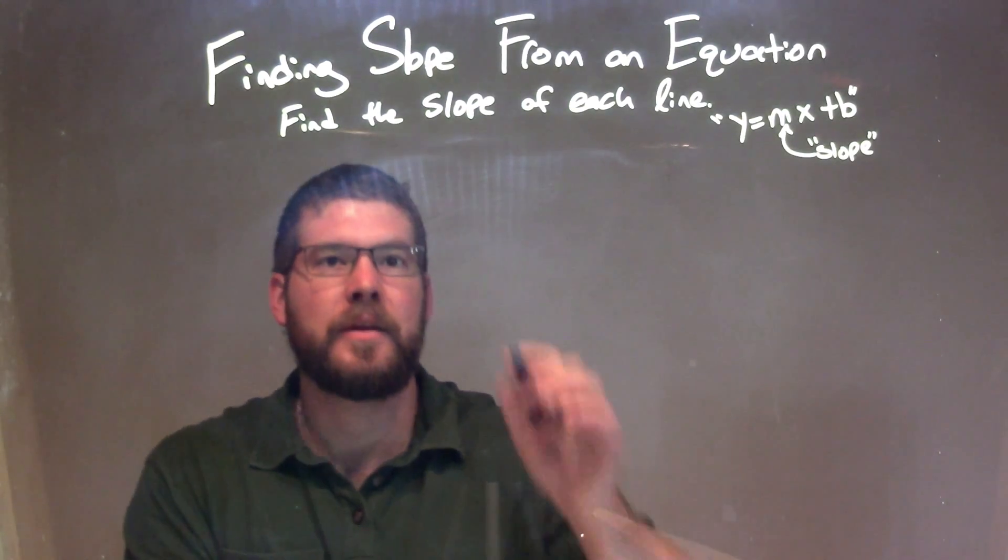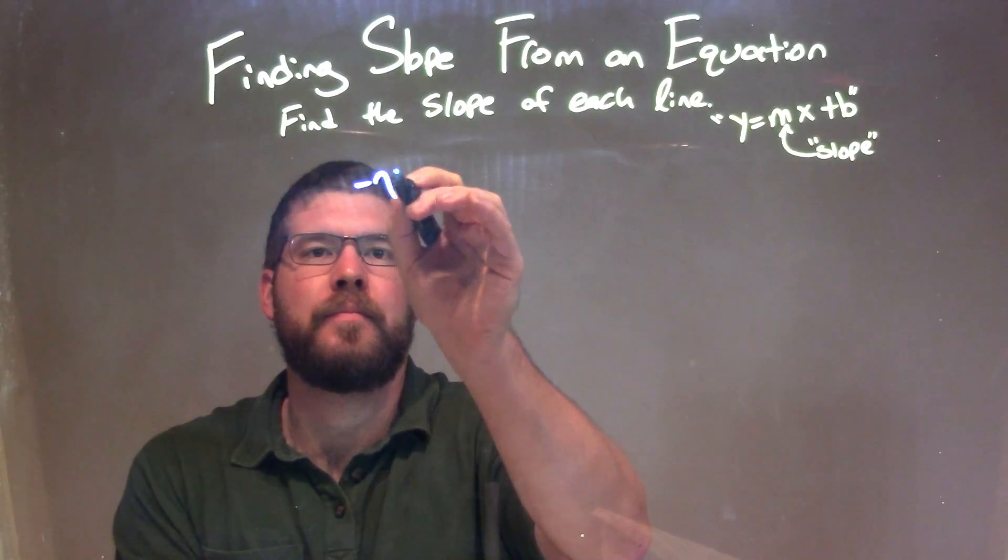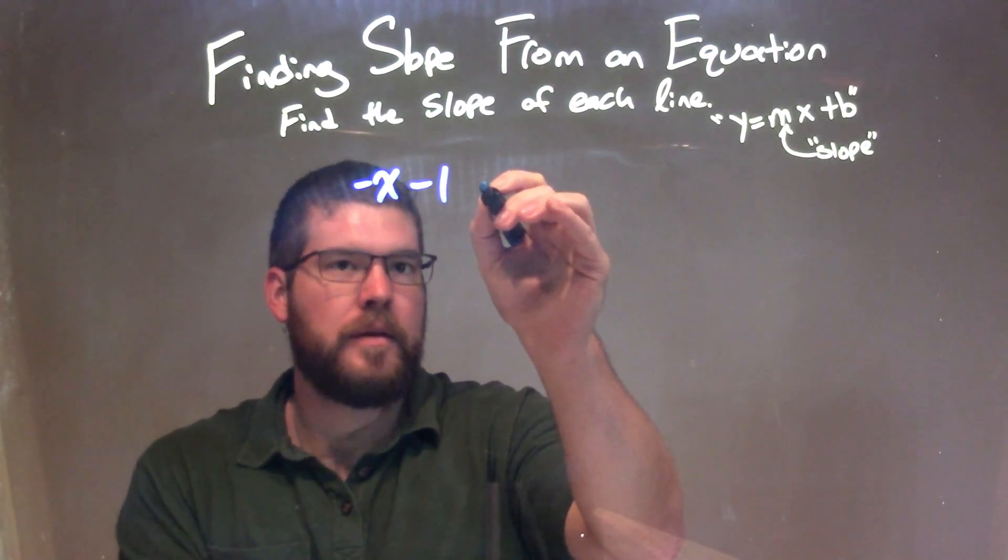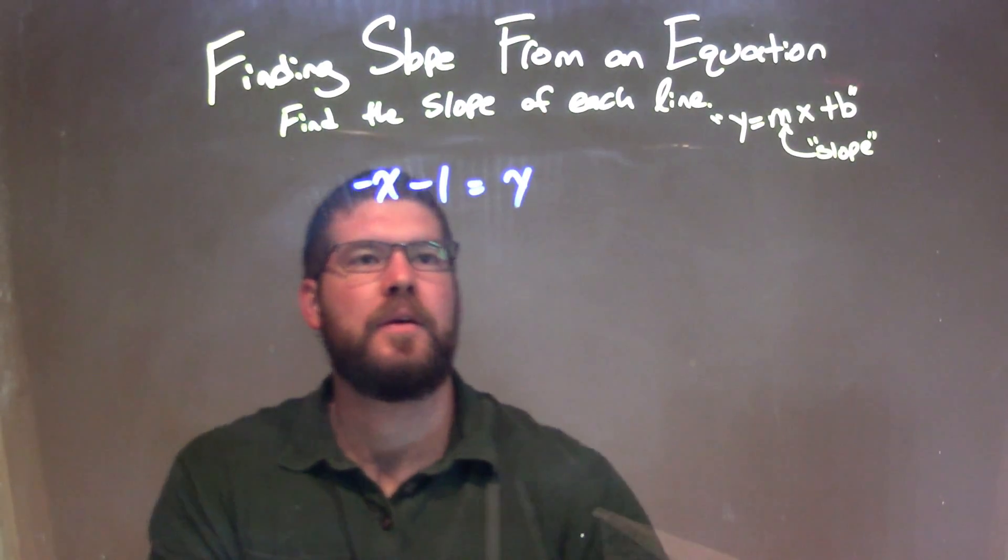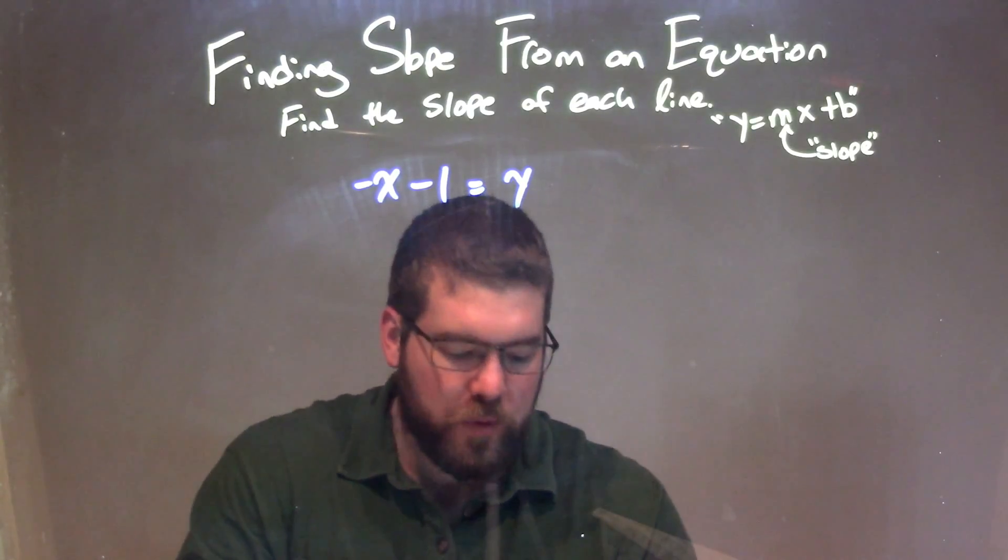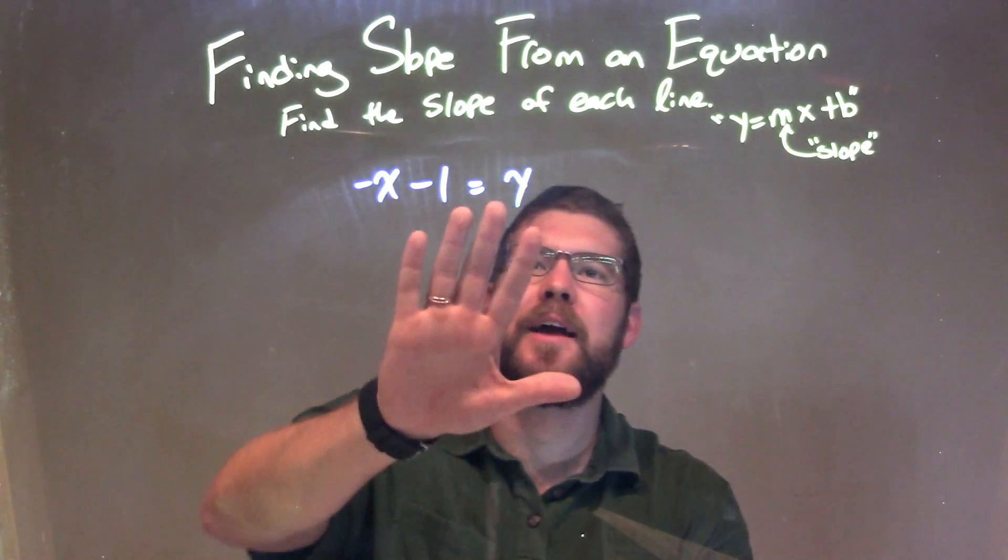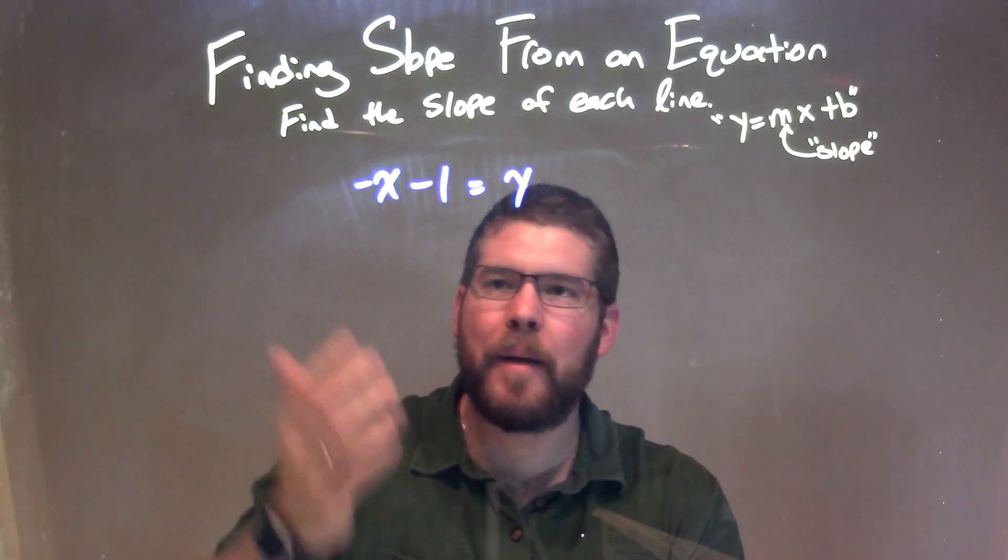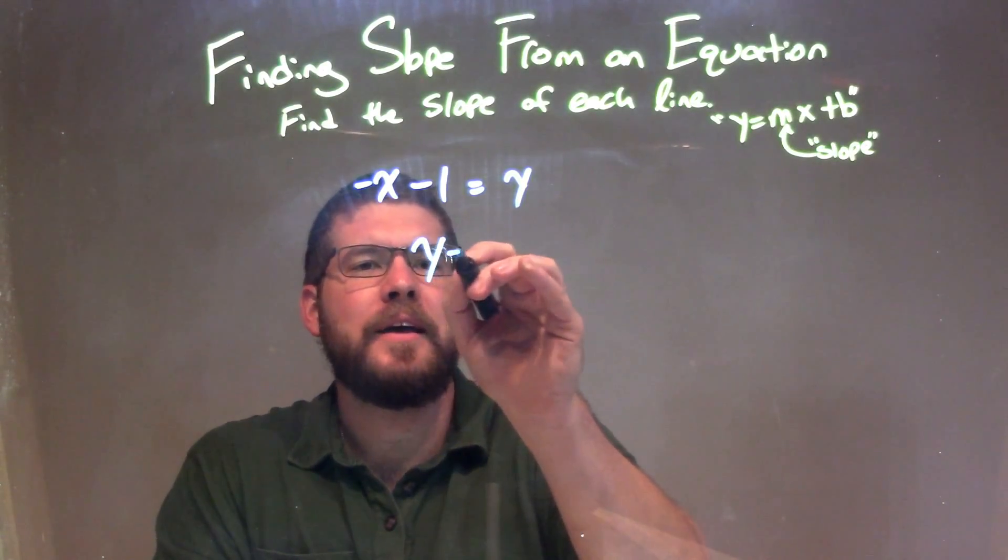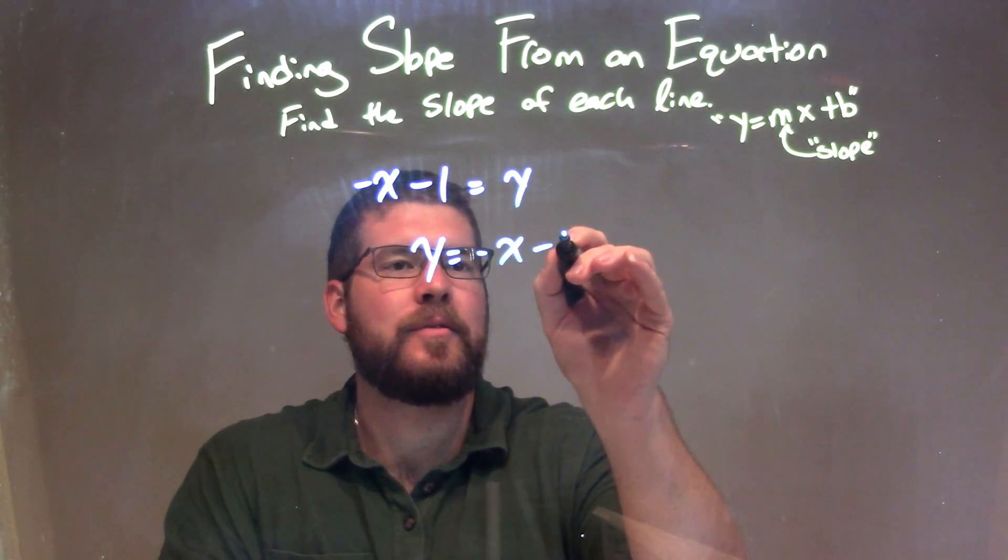So if I was given this equation, negative x minus 1 equals y. Well, luckily for me, y is already isolated in this equation. So I can rearrange it, have y come first, it might be a little easier to see. So we have y equals negative x minus 1.